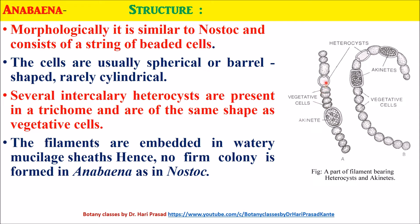Several intercalary heterocysts are present in a trichome and are of the same shape as vegetative cells. The filaments are embedded in a watery mucilage sheath, hence no firm colony is formed in Anabaena as in Nostoc.